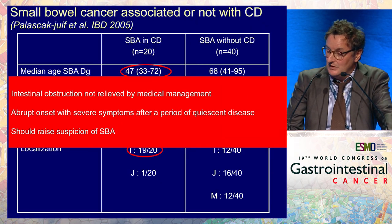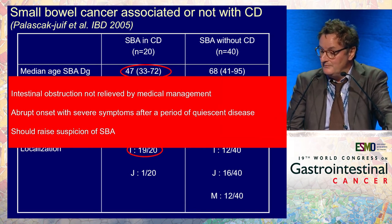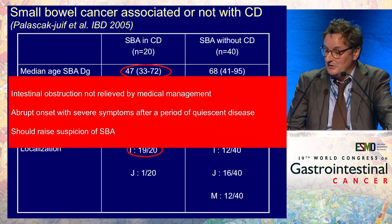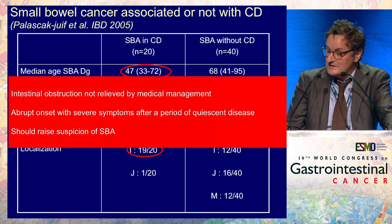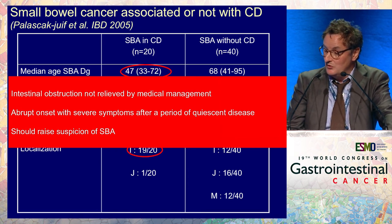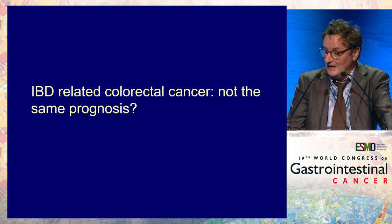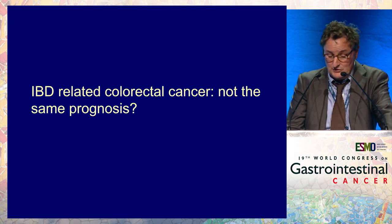Some clues for suspicion: intestinal obstruction not relieved by medical management, and abrupt onset with severe symptoms after a period of quiescent Crohn's disease should raise suspicion of small bowel adenocarcinoma associated with Crohn's disease.